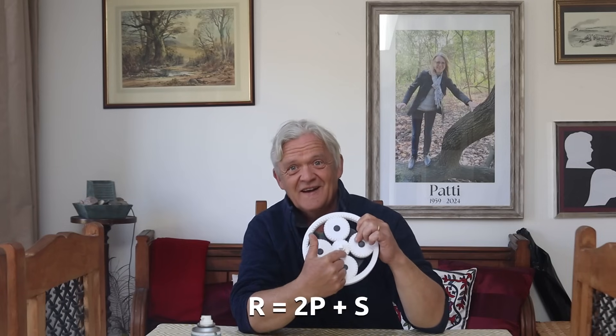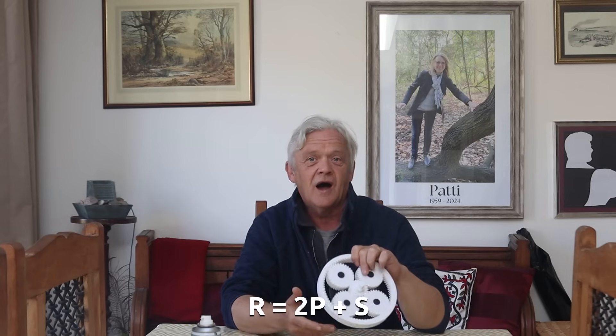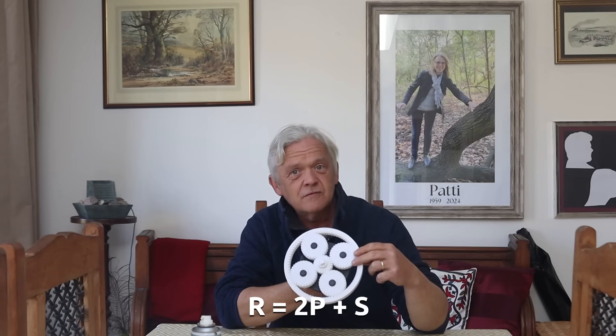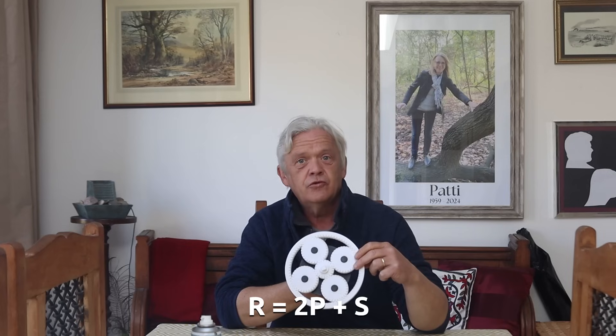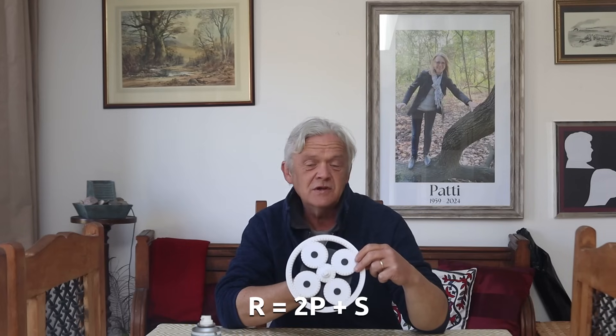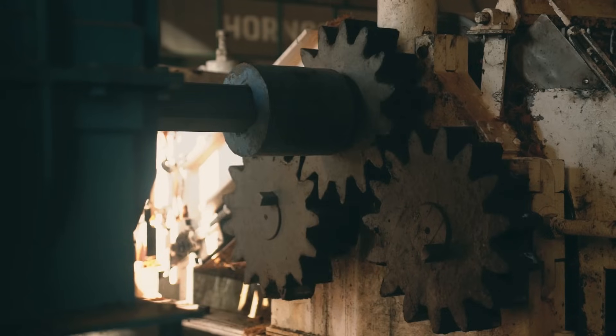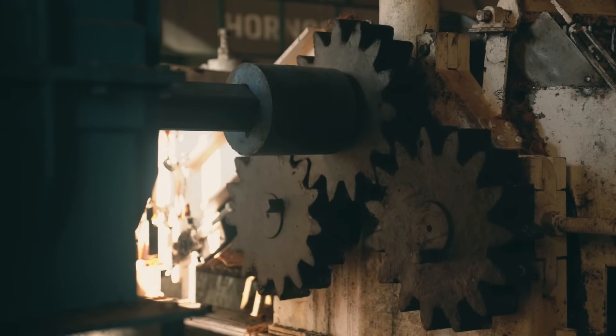So if we want to know how many gear teeth this ring has, we add that, and that, and that, to give us a formula where the number of teeth on the ring is equal to two times the number of teeth on the planet plus the number of teeth of the sun. And that is one of the essential bits of information. The other one is keep the modulus the same, because the gear teeth have to engage, so the modulus needs to be the same. So that really is all you need to know about planetary gears.